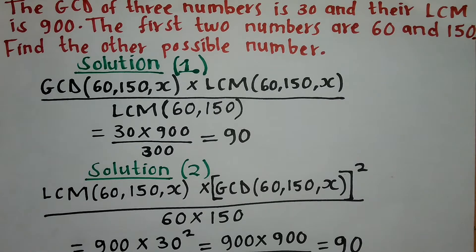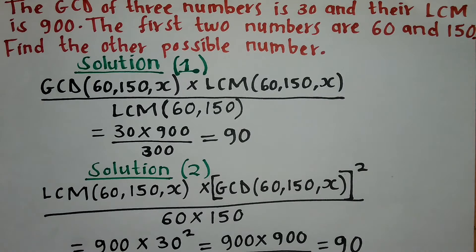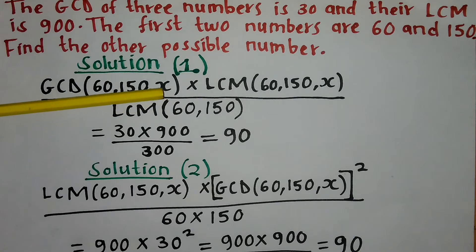We've been asked to find the other possible number. We have two methods to work this out. The first method: we take the GCD of the three numbers, that is 60, 150, and the unknown number X, and the LCM of the three numbers, that is 60, 150, and the unknown number X.